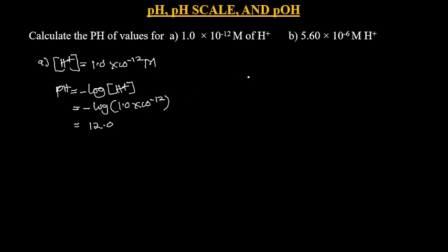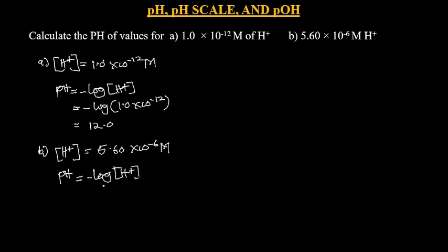For part B, [H+] equals 5.60 times 10 exponent minus 6 molar. Looking at that value, you can see it is below 10 exponent minus 7, so we should be expecting a pH lower than 7. pH equals negative log of [H+], which is negative log of 5.6 times 10 exponent minus 6. We get pH equal to 5.25. That is how you calculate pH when you know the H+ or hydronium ion concentration.